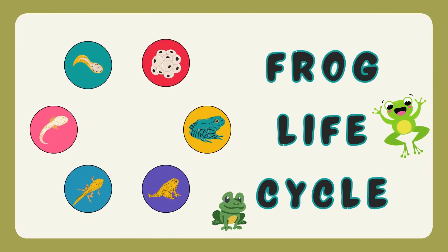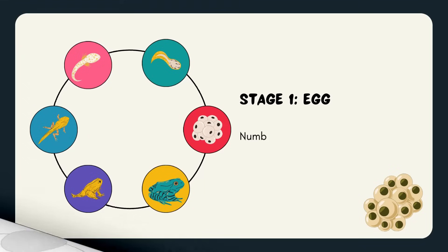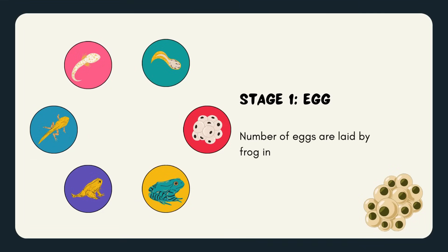Hello students, welcome to SEM Study Lab. Today we are going to study the life cycle of frog. Stage 1: Number of eggs are laid by frog in water. The tadpoles come out from the eggs after 1 to 3 weeks.